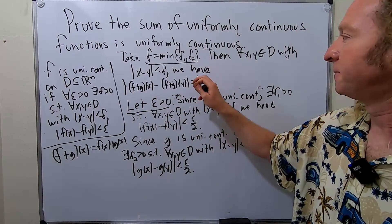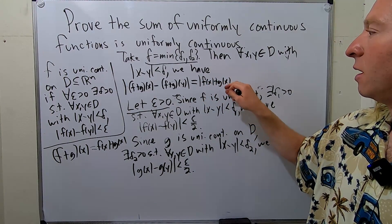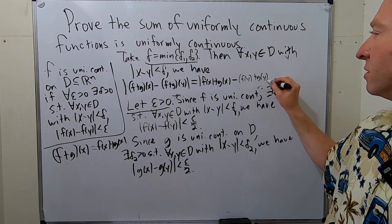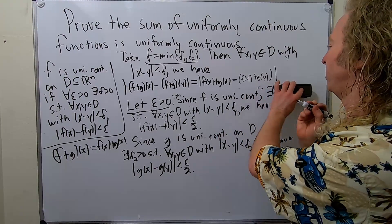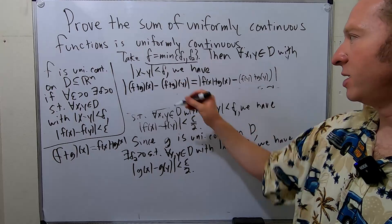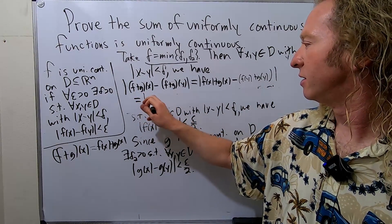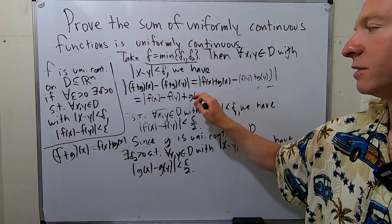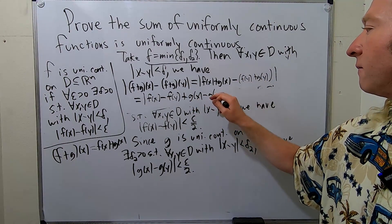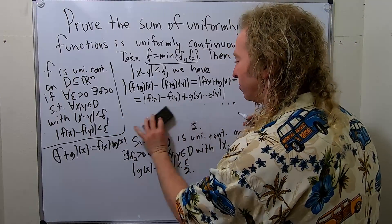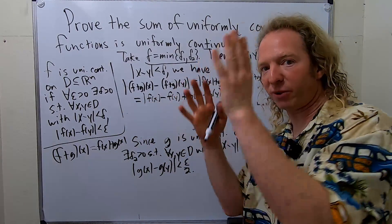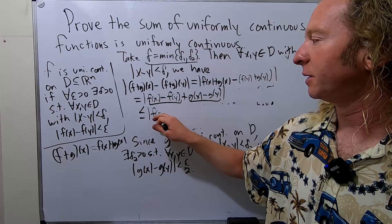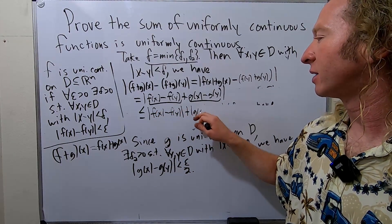This equals the magnitude of f(x) plus g(x) minus (f(y) plus g(y)). We can group these terms as f(x) minus f(y), plus g(x) minus g(y). Now we apply the triangle inequality: the magnitude of a sum is less than or equal to the sum of the magnitudes. So this is less than or equal to |f(x) − f(y)| plus |g(x) − g(y)|.